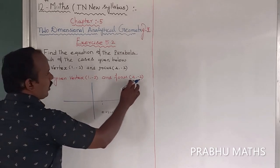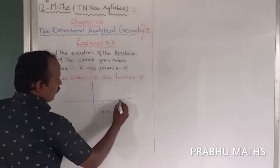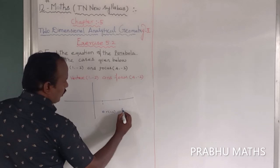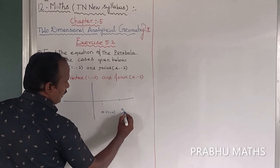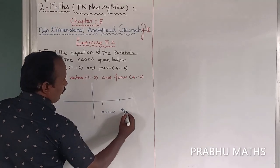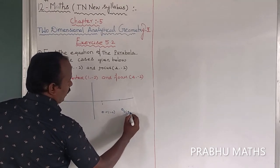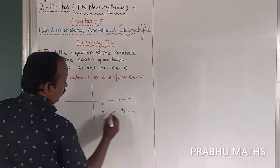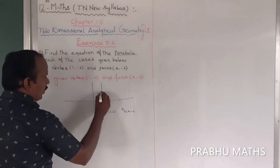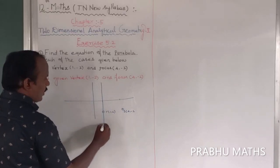Next, focus (4, -2). That is 4, this one — so the focus point is at (4, -2). We mark V for vertex and F for focus on the graph.